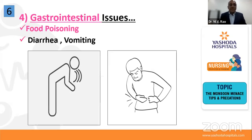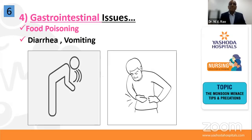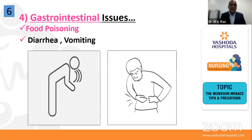For gastroenteritis, we have vaccines — particularly rotavirus vaccines for children, which should be given regularly. Whenever children get diarrhea or gastroenteritis, don't neglect it because they can suddenly collapse and go into shock. We lose many children under five years of age every year due to lack of proper understanding of the disease. When children get gastroenteritis, give them ORS, fresh coconut water, or buttermilk with salt to prevent dehydration before reaching the doctor. To prevent gastroenteritis, practice good personal hygiene, eat freshly prepared hot food, store food properly, and consult a doctor immediately when symptoms appear.